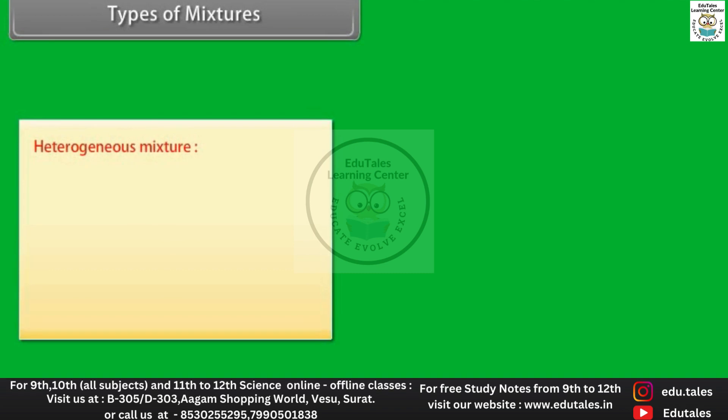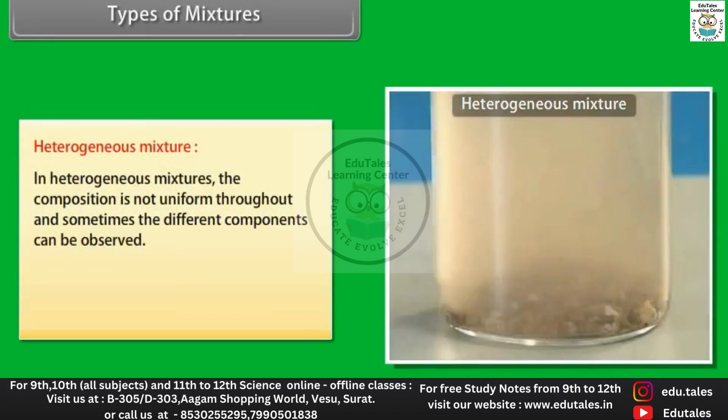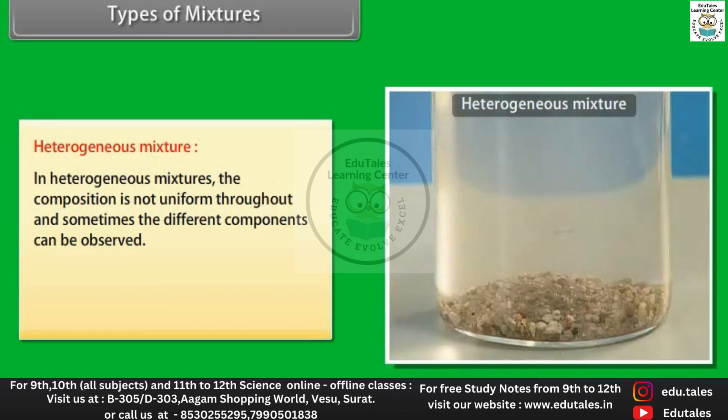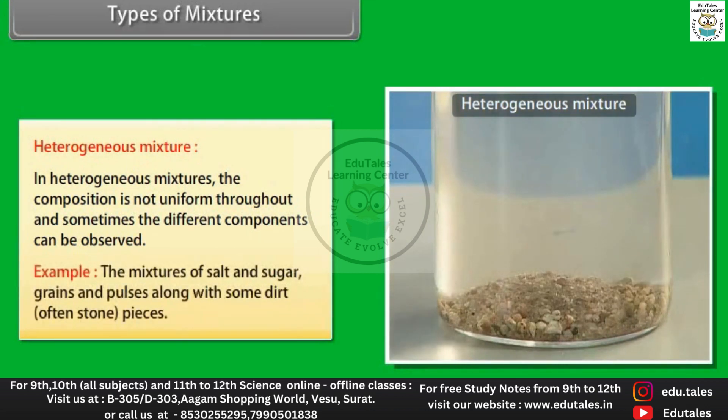In heterogeneous mixtures, the composition is not uniform throughout and sometimes the different components can be observed. Example: the mixtures of salt and sugar, grains and pulses along with some dirt, often stone pieces.